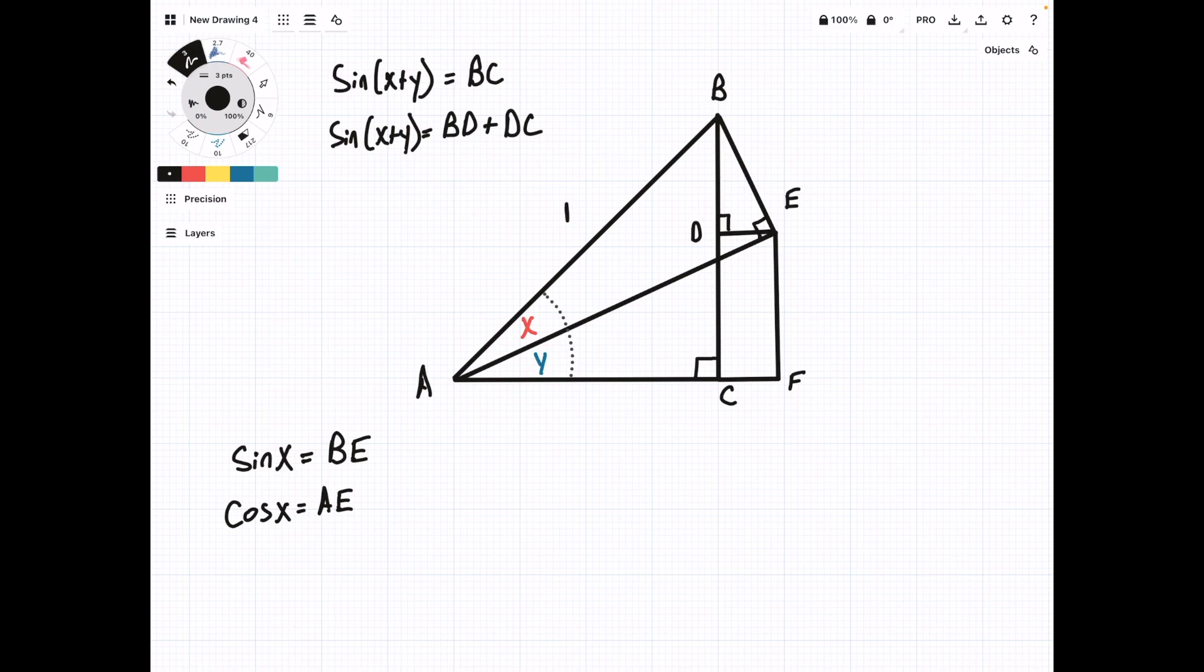Step two, we're going to find the sine of this angle on the bottom, sine of Y. Sine of Y is going to be opposite EF over the hypotenuse, which is AE. Cool thing is, we just figured out what AE is, so we can plug in cosine of X here. So this is going to be EF over cosine of X, and then we can solve for EF. So EF equals sine of Y times the cosine of X.